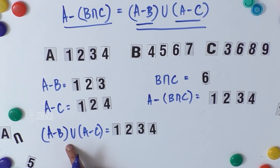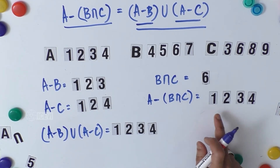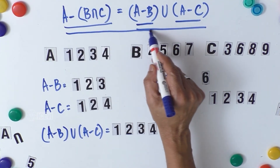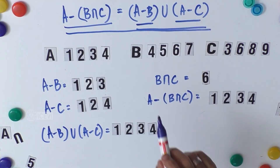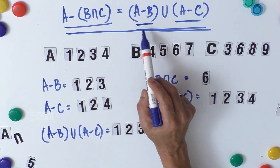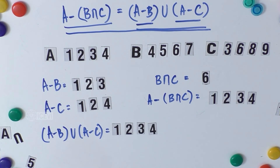Comparing the results: A minus B union A minus C is {1, 2, 3, 4} and A minus (B intersection C) is also {1, 2, 3, 4}. We have proved De Morgan's Law of set difference, which states that A minus (B intersection C) equals (A minus B) union (A minus C). I am sure with this kind of experience the child will be able to understand De Morgan's Law of set difference.